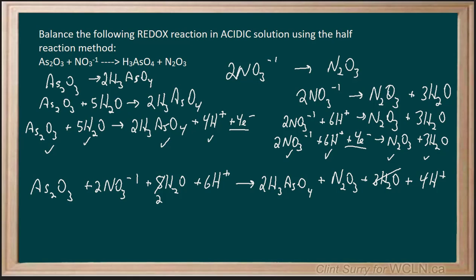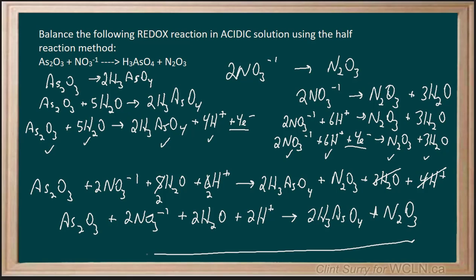So I end up with As₂O₃ plus 2NO₃⁻ plus 2 water plus 2 hydrogen ions, giving me 2H₃AsO₄ plus N₂O₃. And this is our balanced redox reaction in acidic solution using the half-reaction method.